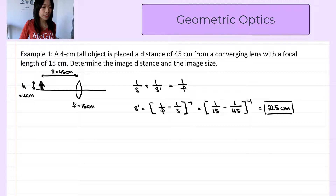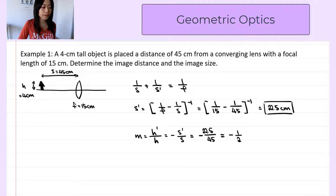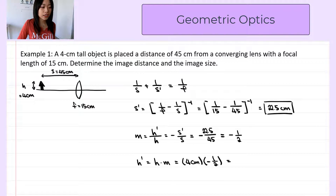We also want to find the image size, which means we want h prime. The lateral magnification m equals h prime divided by h, and it also equals negative s prime divided by s. Substituting: s is +45 cm and s prime is +22.5 cm, so the lateral magnification is negative one-half. Therefore, h prime equals the object height times m: 4 cm times negative one-half equals negative 2 cm. The negative sign means the image is inverted.